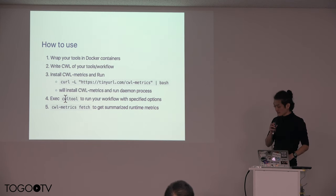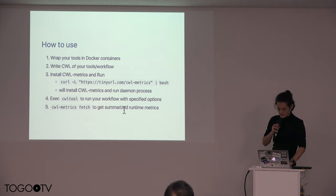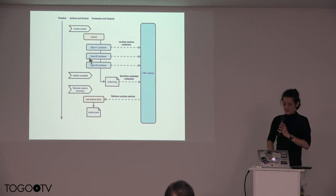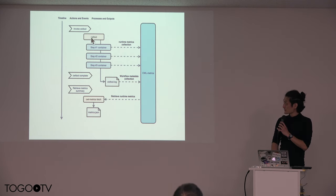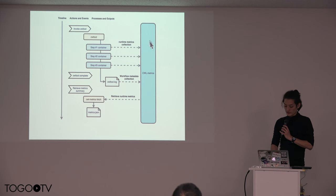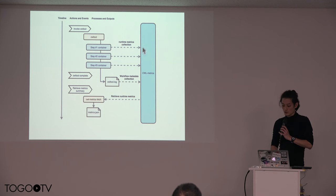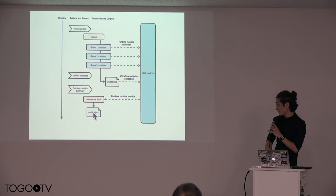After the execution of the workflows, you can use the CWL metrics fetch command to get summarized runtime metrics. Here is the basic timeline: you invoke CWL tool to run your workflow; CWL tool launches the containers for step one, step two, step three; then it finishes the workflow and outputs a log file. CWL metrics collects the runtime metrics like CPU and memory usage of each step, captures the log file, and accumulates everything in the database.